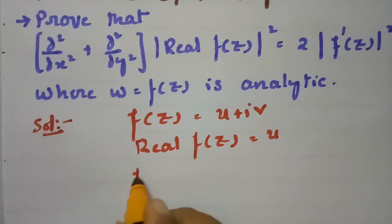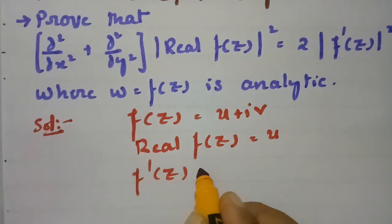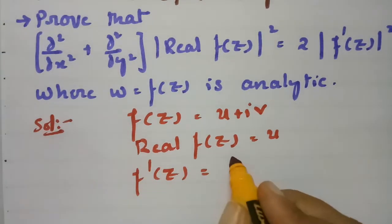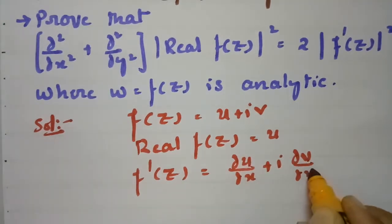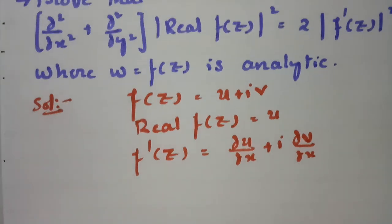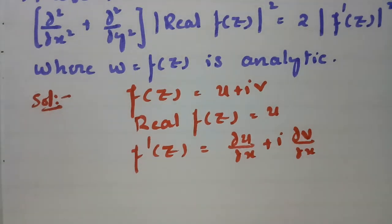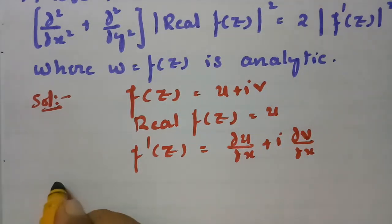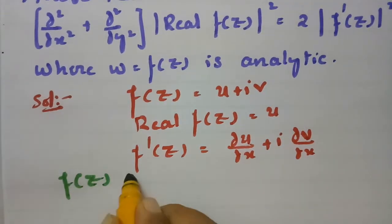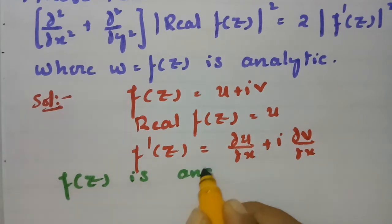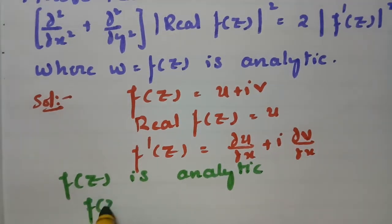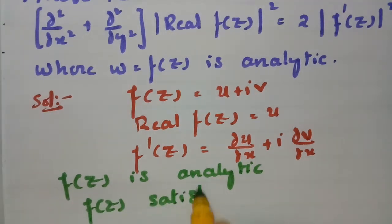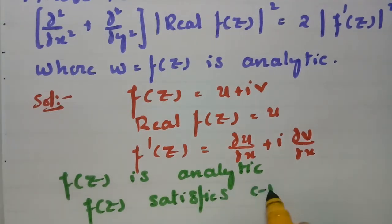If I make a derivative with respect to x, then f'(z) = ∂u/∂x + i·(∂v/∂x). It is given that f(z) is analytic, which means that it obeys the CR equations. So f(z) satisfies the CR equations.